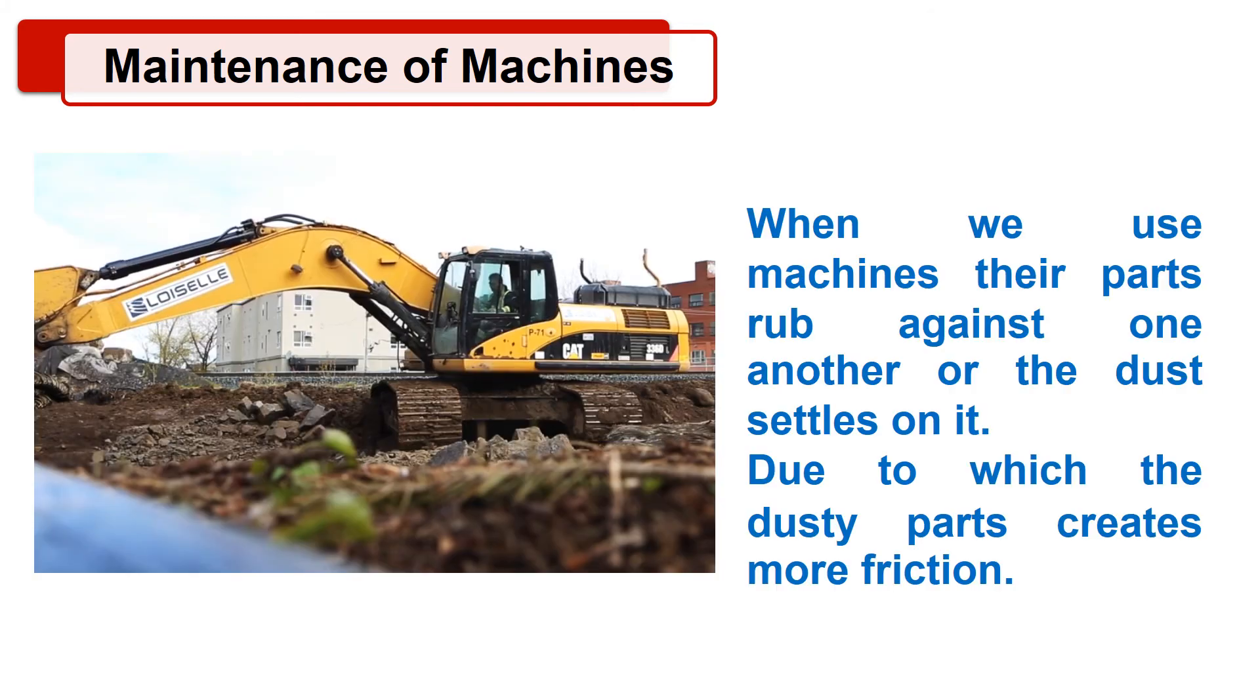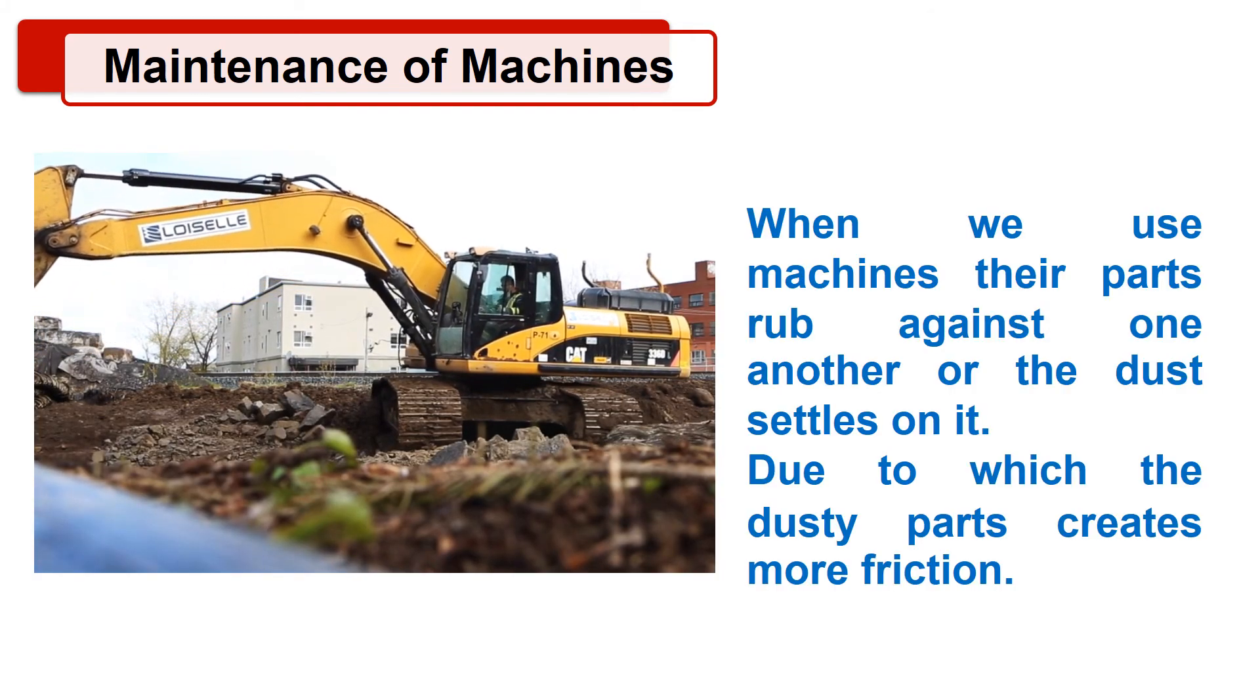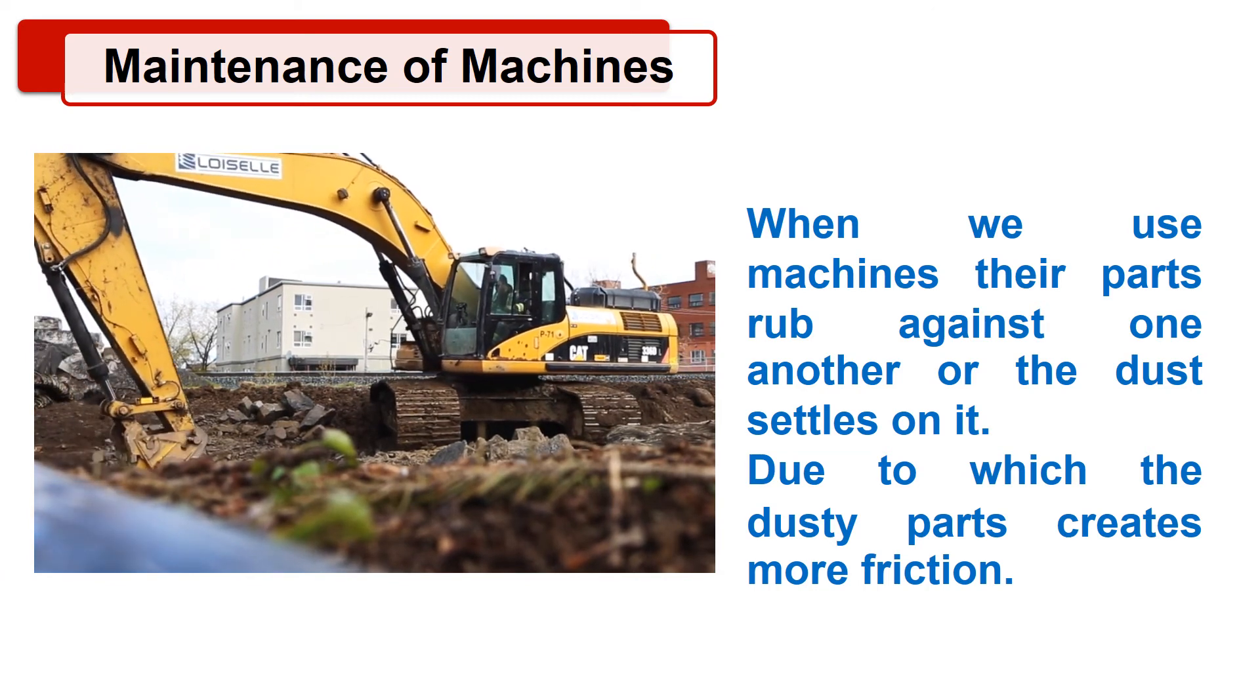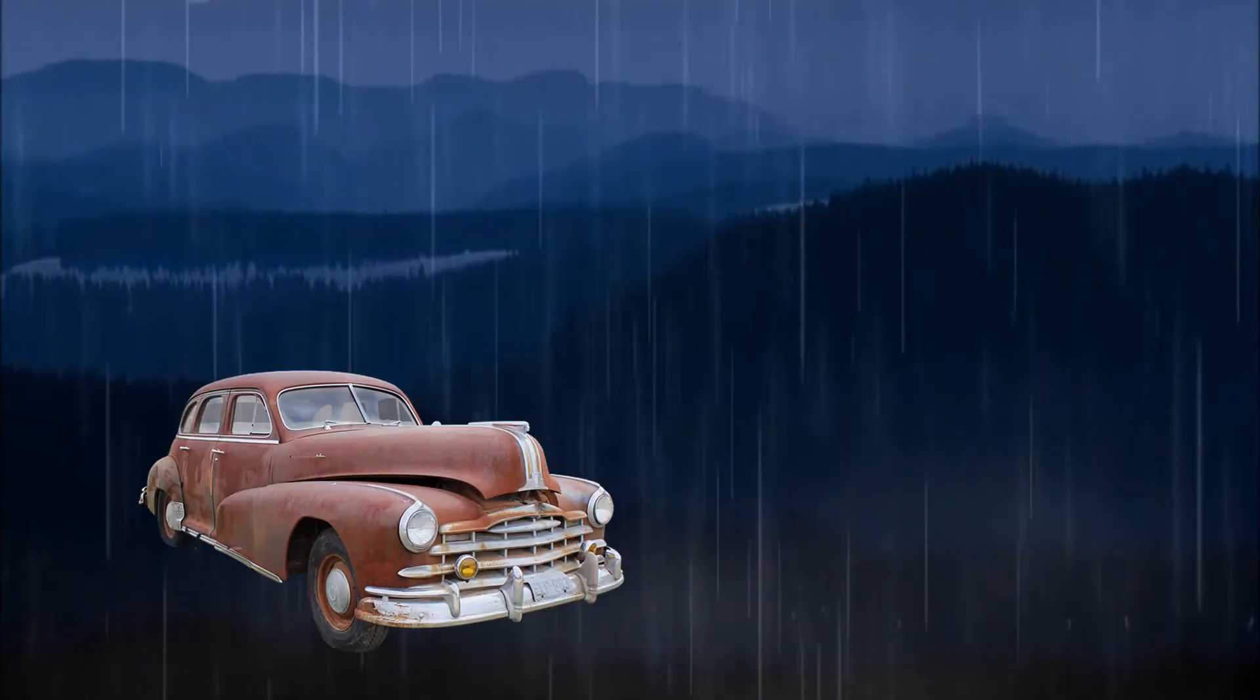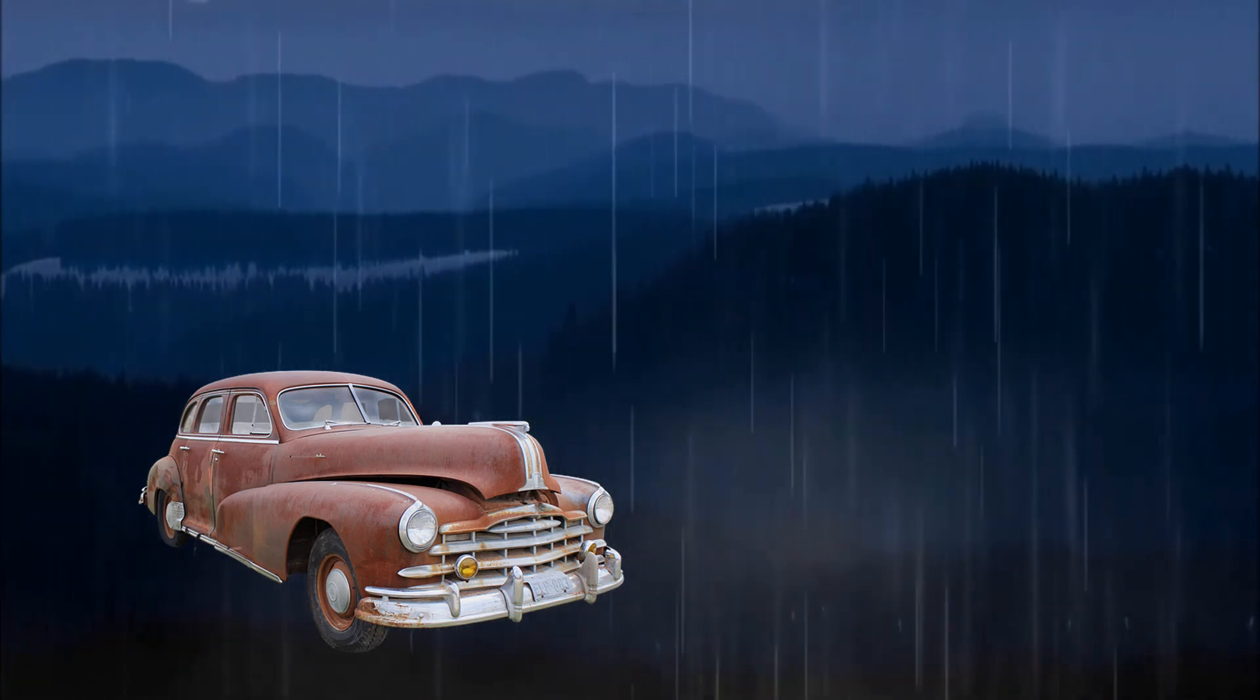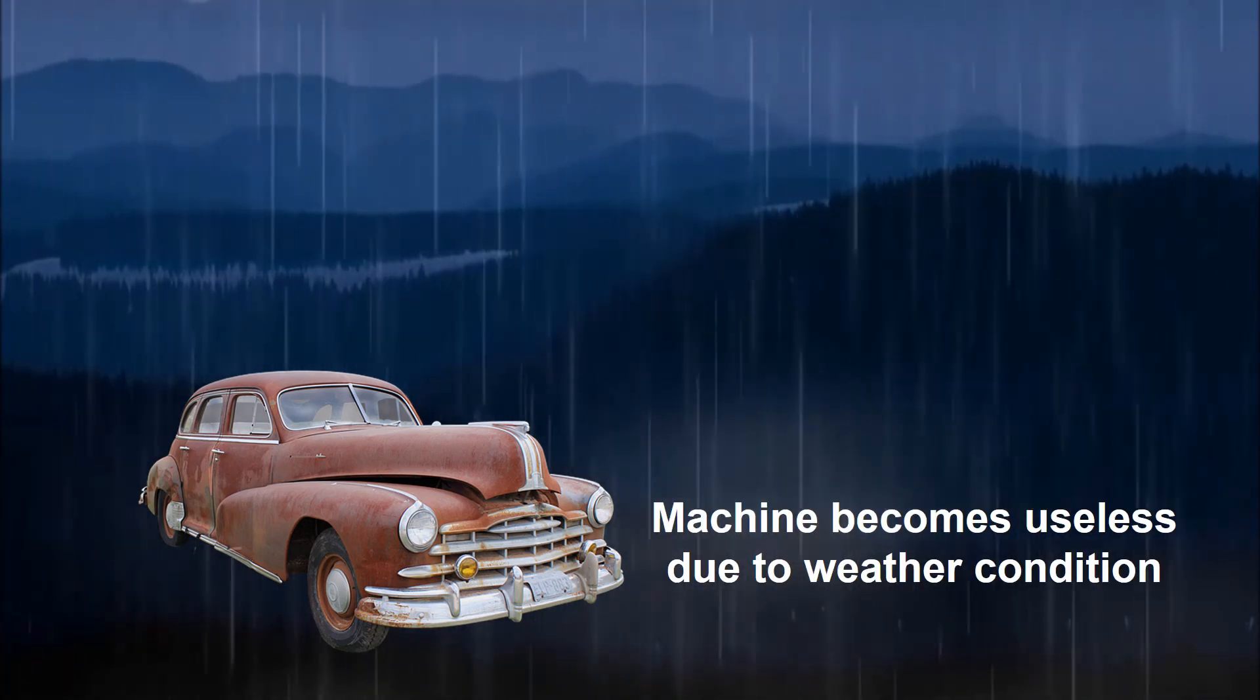When we use machines, their parts rub against one another or the dust settles on it. Due to which, the dusty parts create more friction. Also, some parts of the machines are affected by weather conditions and get rusted. As a result, machines get damaged or become useless due to such wear and tear.